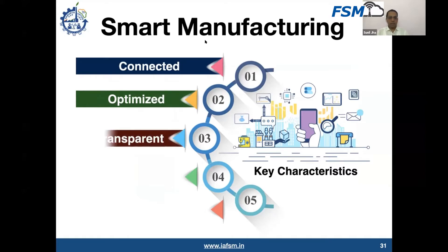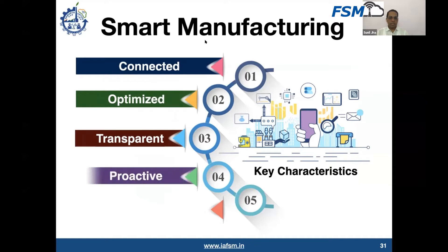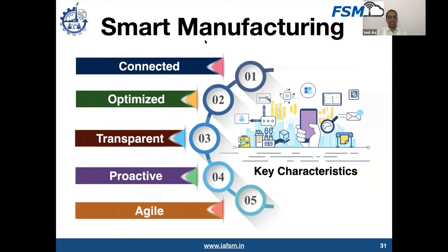Then we'll talk about optimization, the transparency buildup, the proactive approach being adopted, and finally the agility being achieved. If you have any of these characteristics implemented into the factory, we will say that you are moving on a journey towards smart manufacturing and you have already realized these results, and your facility exhibits these characteristics.